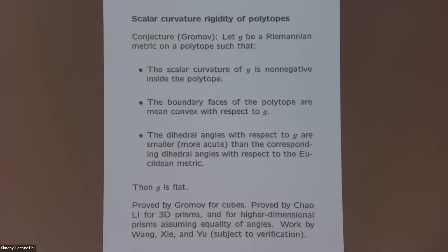The first partial result on this conjecture was proved by Gromov himself, who verified it for cubes. Then in an important paper, Zhao Li proved it for prisms in 3D, and was able to verify the conjecture for higher dimensional prisms but had to assume equality of angles — assuming positivity of scalar curvature, positivity of the mean curvature, but with equality rather than inequality for the angles. There's also work by Wang, Xie, and Yu which claims to prove the conjecture in all dimensions without any extra assumptions, subject to verification.